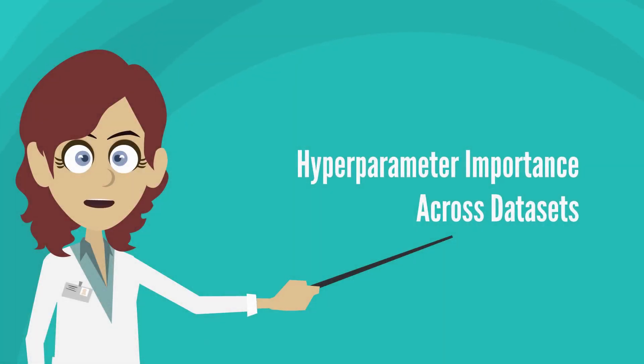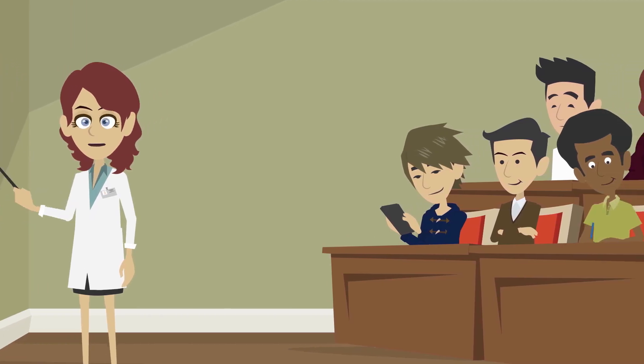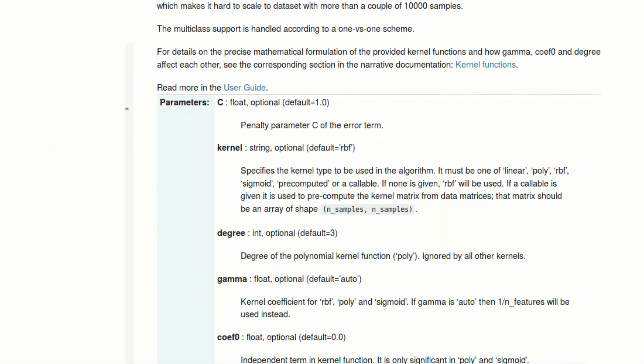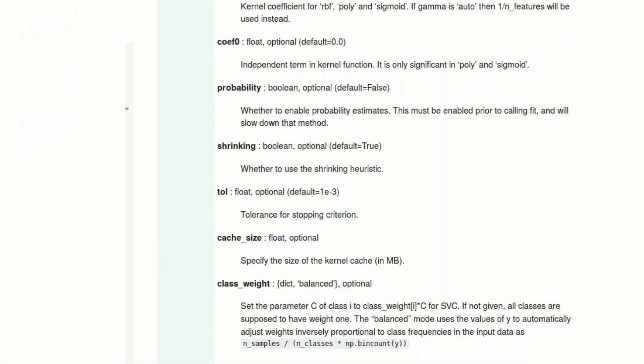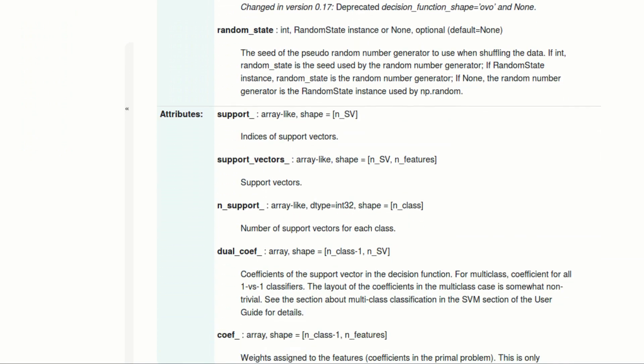In this lecture we will talk about hyperparameter importance across datasets. Almost all interesting machine learning algorithms have many hyperparameters. Examples of these hyperparameters for support vector machines are gamma and complexity, but there are many more, as you can see from this documentation website.